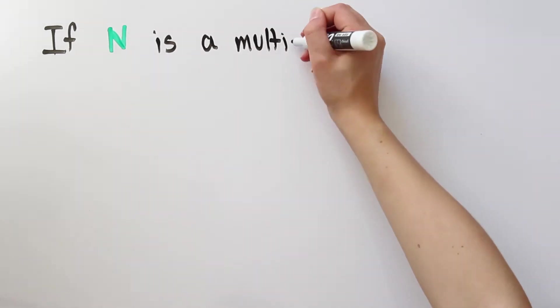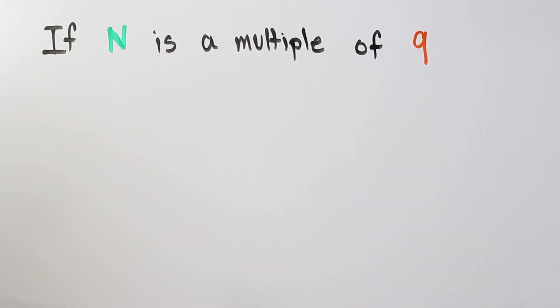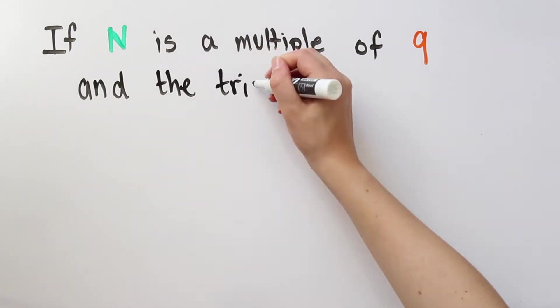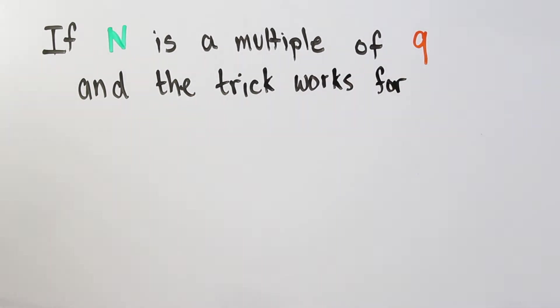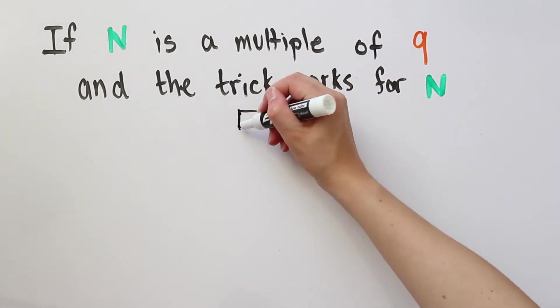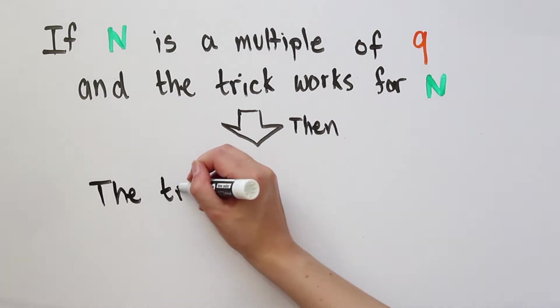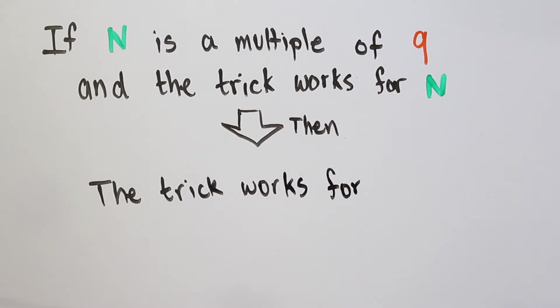I hope that even the most skeptical among you are convinced that the 9's trick works now. We have shown that if we take any multiple of 9 that satisfies the trick, and add 9 to it, the result will still satisfy the trick. By induction, we can see that the trick works for every multiple of 9. There is a similar proof for the 3's trick, but it involves checking a few more cases, so I will leave that as a challenge to you all.